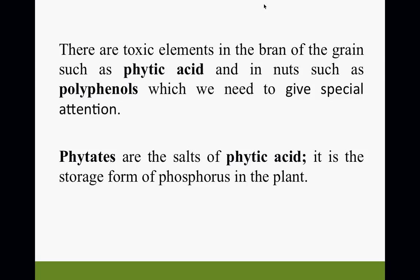There are toxic elements in the bran of grain, such as phytic acid, and in nuts such as polyphenols, which we need to give special attention to. Phytates are the salts of phytic acid. It is the storage form of phosphorus in a plant. This section is rather interesting and an extremely sweet area to teach.